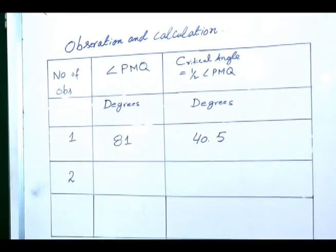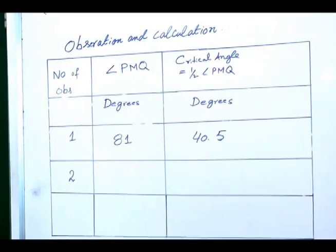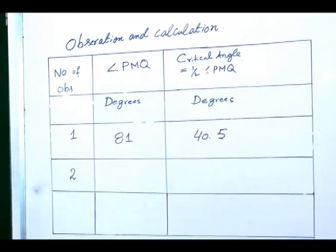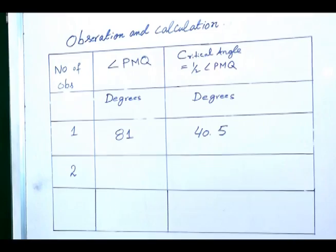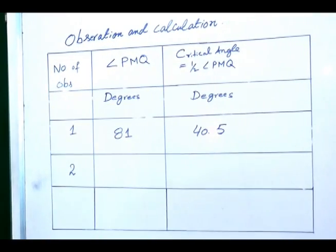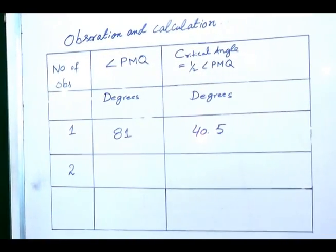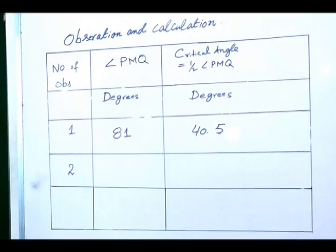Since we want to find the critical angle, the critical angle is half of angle PMQ, which comes out to be 40.5 degrees.